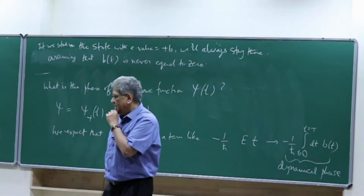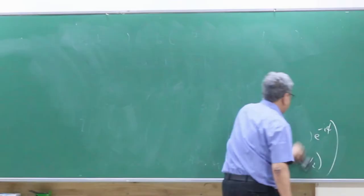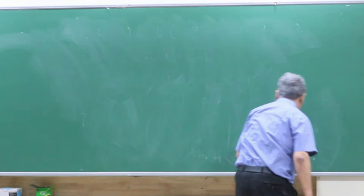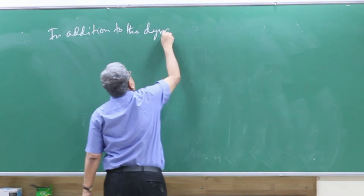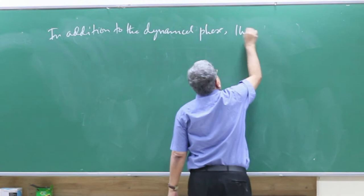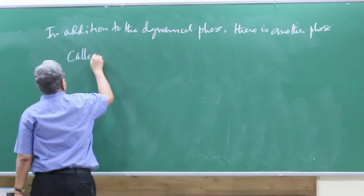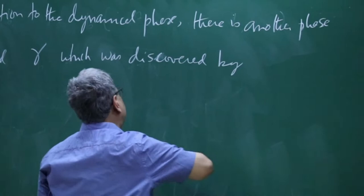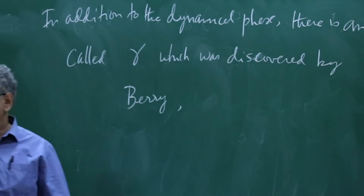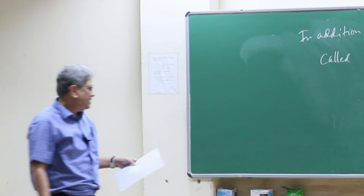The big surprise is that there is an extra phase beyond the dynamical phase, called γ, which was first discovered by Berry. Remarkably, this discovery came only in 1984 — almost 60 years after the beginning of quantum mechanics. Berry's original paper is in Proceedings of the Royal Society of London, Volume 392, 1984, page 45.